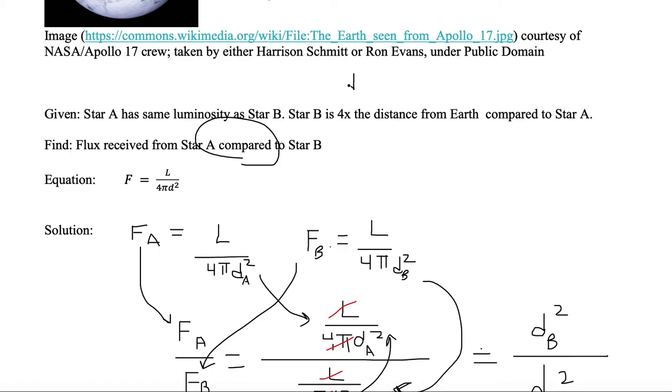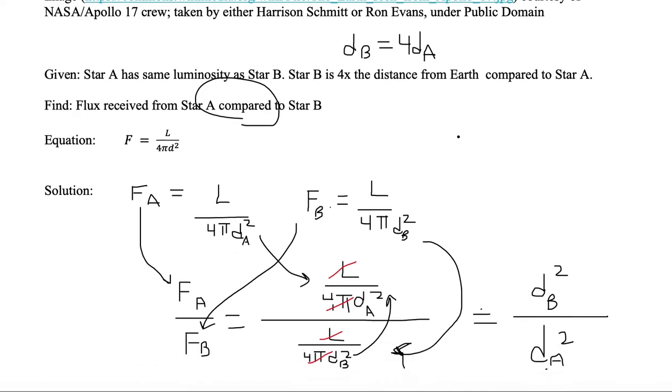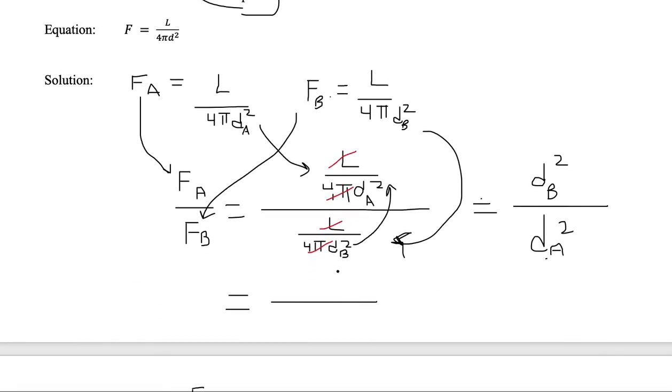So the distance of B equals 4 times the distance of A. So wherever we see dB, we just need to substitute in for dA. There is dB on the numerator.